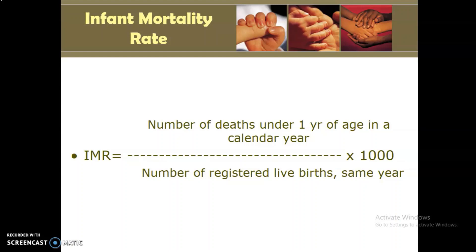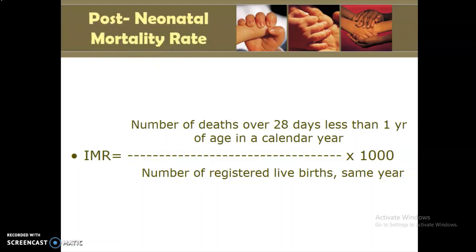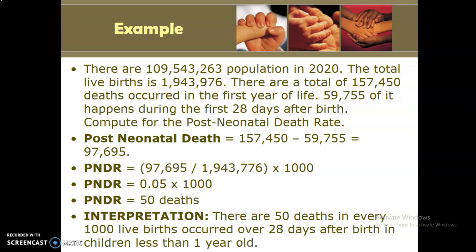The formula for infant mortality rate is: the number of deaths under one year of age in the calendar year over the number of registered live births, times 1,000. The neonatal mortality rate formula uses deaths under 28 days of age over live births times 1,000. The post-neonatal mortality rate uses deaths over 28 days and less than one year of age over the number of registered live births in the same year, times 1,000.